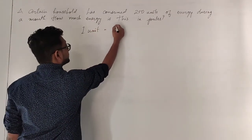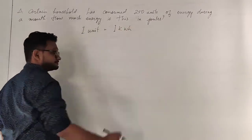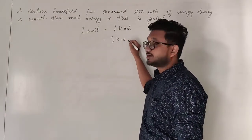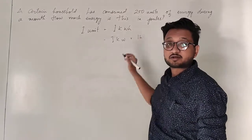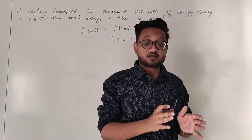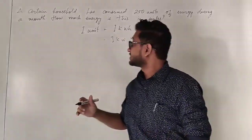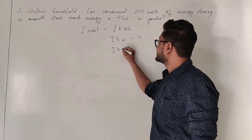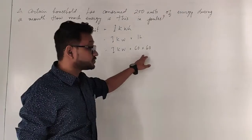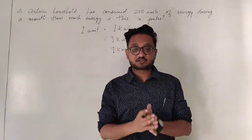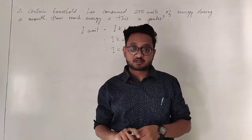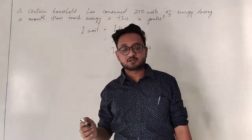First, we have to remember what is one unit. One unit is equal to one kilowatt-hour, which means we are consuming one kilowatt of energy for one hour continuously. In one hour we have 60 minutes, and in 60 minutes we have 60 seconds, so every second one kilowatt of energy is consumed.